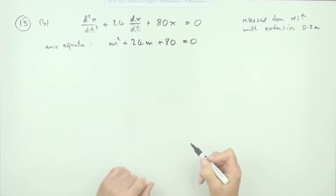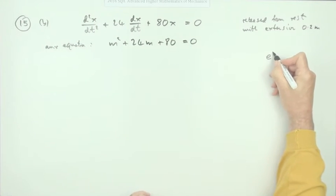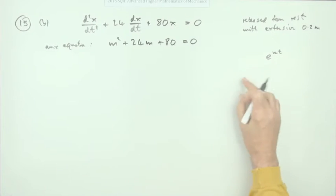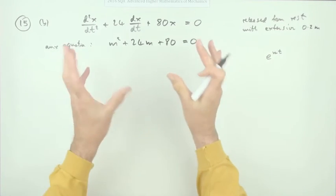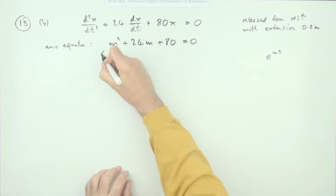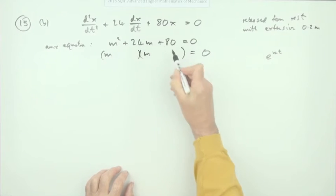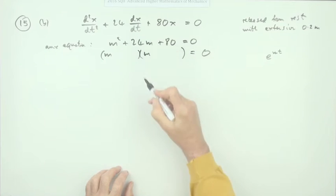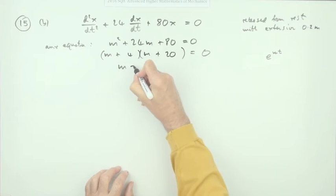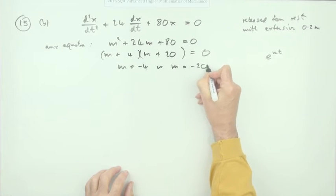The auxiliary equation comes from assuming a solution of the form e^(mt). Working through the derivatives, e^(mt) is a common factor and we're left with the polynomial in m. This factorises readily: (m + 4)(m + 20) = 0, giving m = −4 or m = −20.